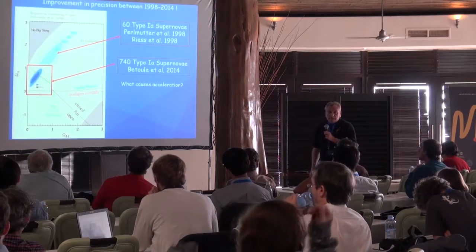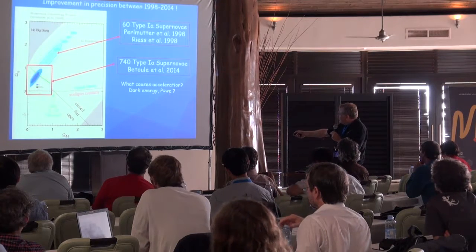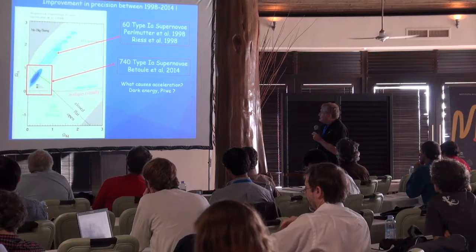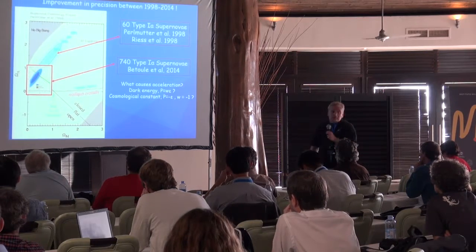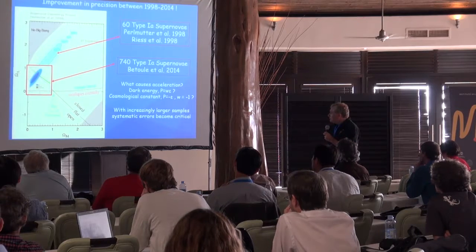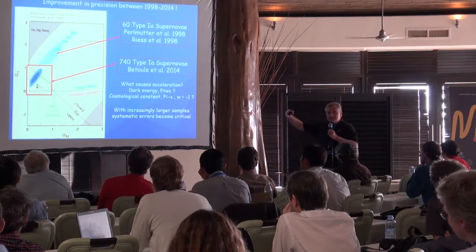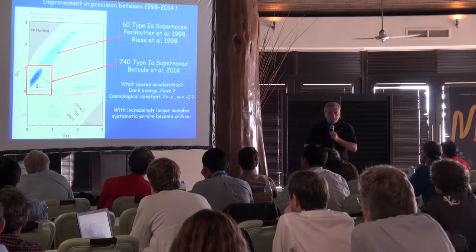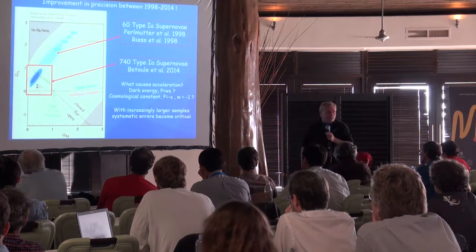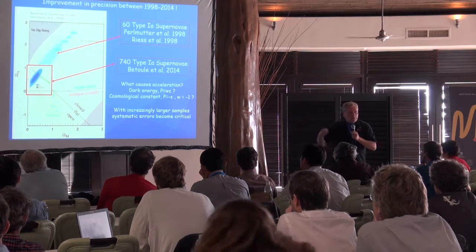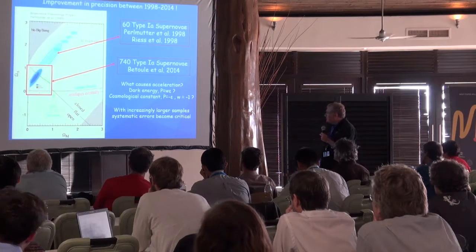What we would all like to know is what causes acceleration. What type of dark energy is it? What is the equation of state? Is it the cosmological constant or something else? As we increase the number of objects, these error bars will shrink, but we will still have to deal with systematic errors. We are reaching the point where systematic errors are comparable to statistical ones.